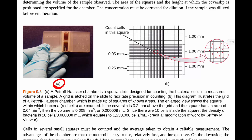Here, panel A shows what the Petroff-Hauser chamber actually looks like — the slide designed for counting cells. Panel B illustrates the grid on the chamber, made up of etched squares with various known dimensions. You can count the cells within a given square, which is shown blown up, and then multiply out to estimate how many cells are in your sample, understanding that this represents a concentration. The red dots in the illustration represent bacteria, and you can actually count the individual bacterial cells.